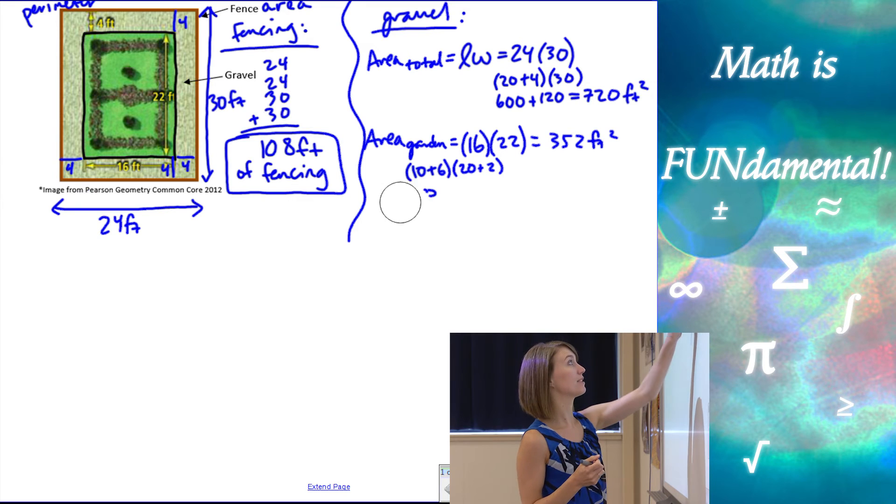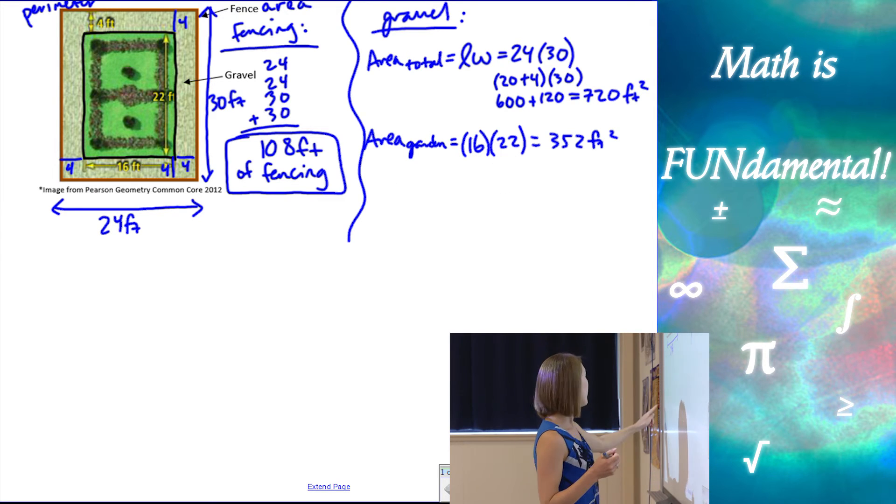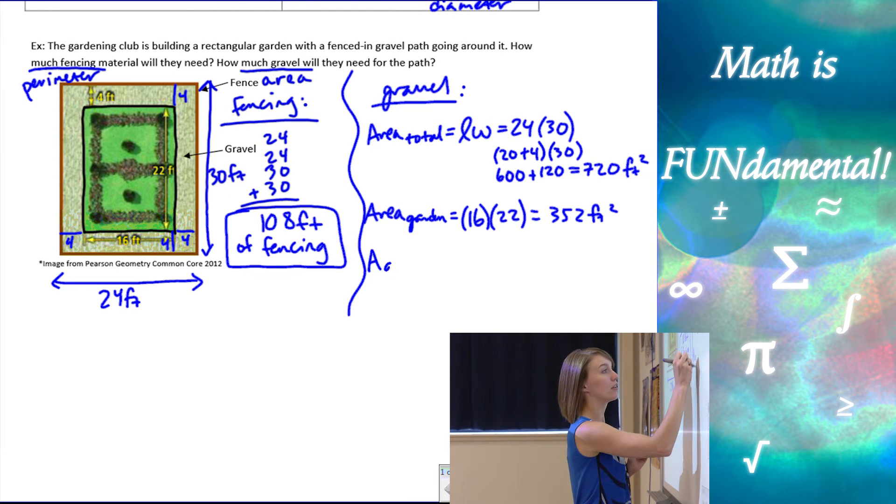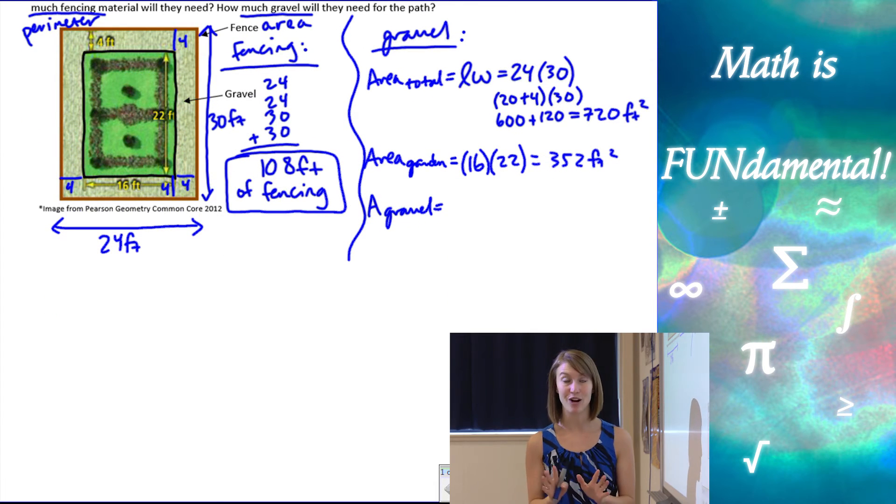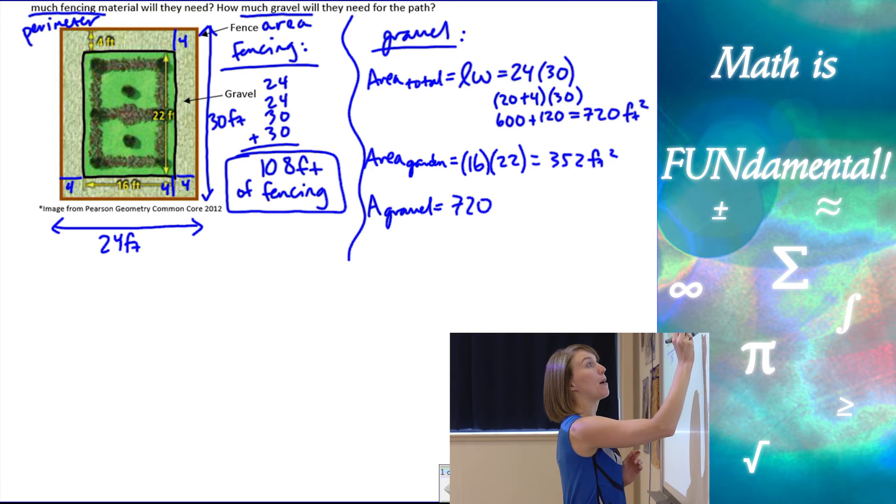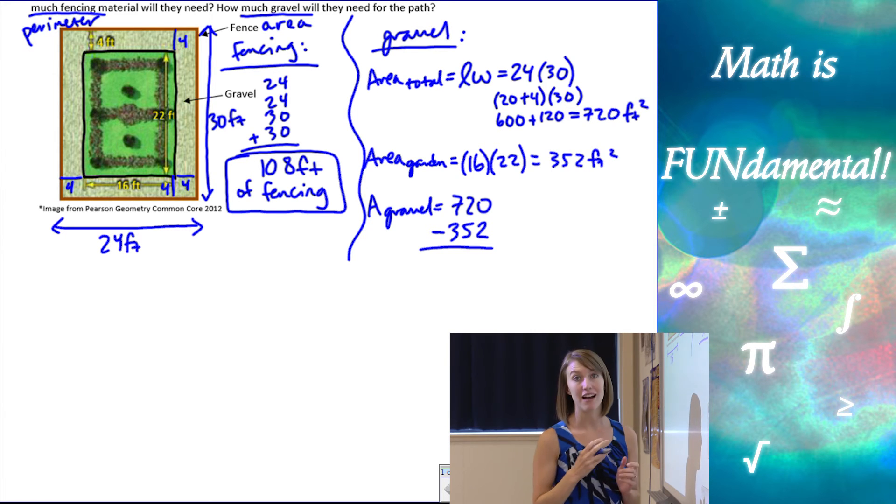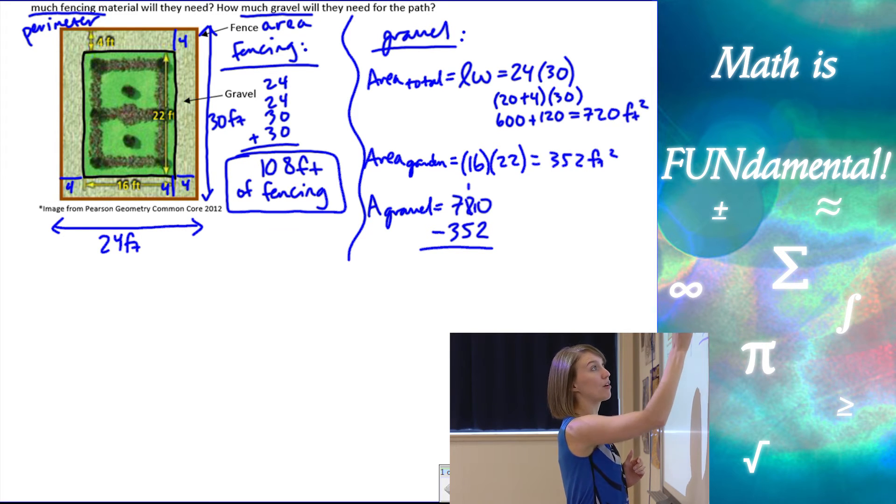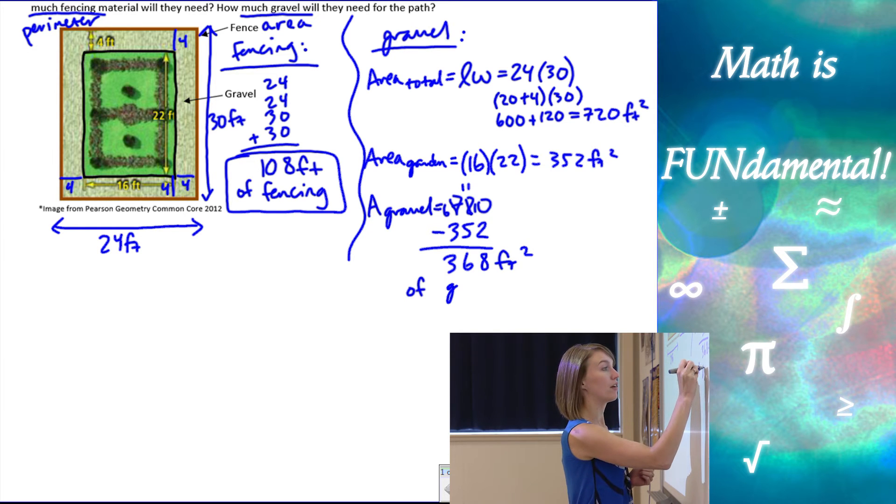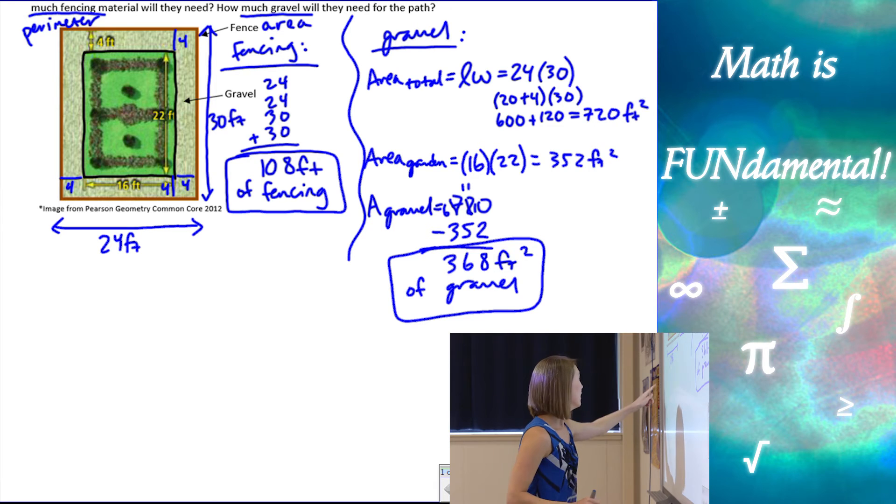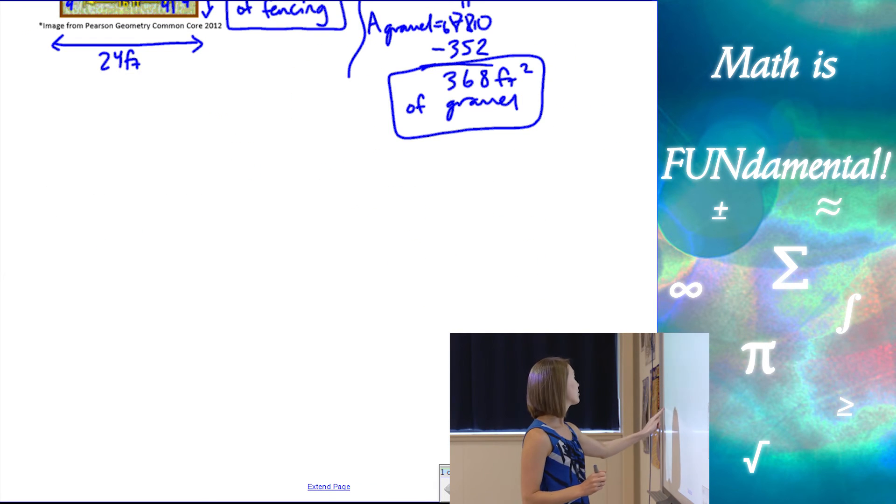So now, if I want the area of the gravel, I want to take the total area and subtract the area from the garden. So I want 720 minus 352. And I want to subtract that out. So our area of the gravel space is going to be 368 feet squared or square feet of gravel. And that's how to find our two answers.